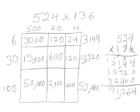And you can see that our first partial product, 3,144. 15,720 is our second one. 52,400 is our last one. Those all came directly from our partial products in our area model.